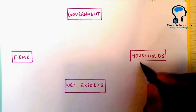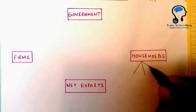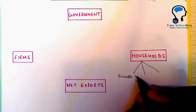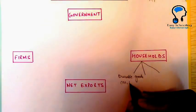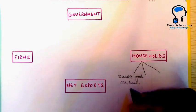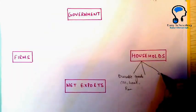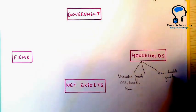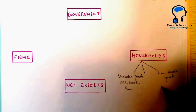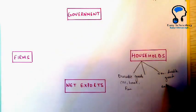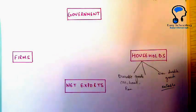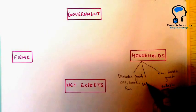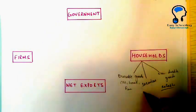What is the expenditure of the households in an economy? Three kinds of expenditure can be there. One can be on durable goods — durable goods like car, house, fan. Then you have non-durable goods, which can be eatables like milk, fruits, and vegetables. And then one more spending of households is on services that households consume.